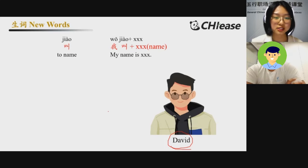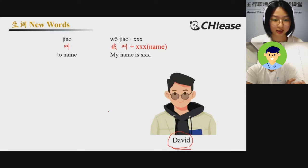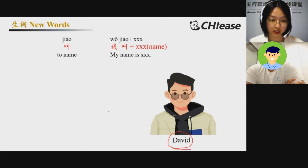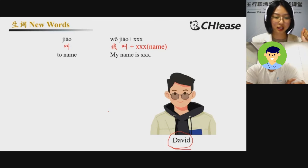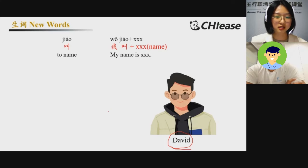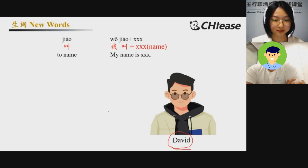You said 我是苏杰 and 我叫苏杰 — it's like 'my name is 苏杰' and 'I am 苏杰', so it's the same meaning.